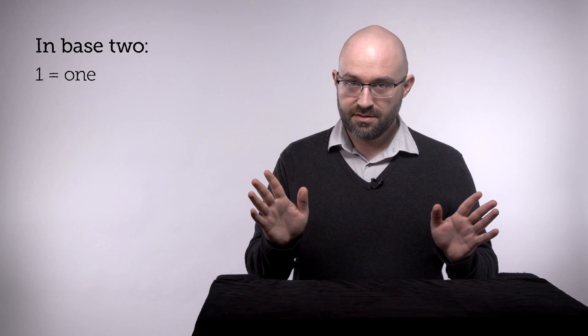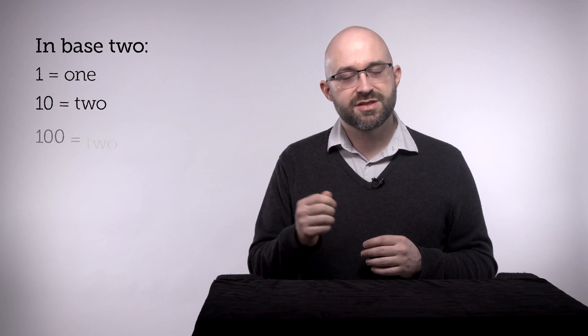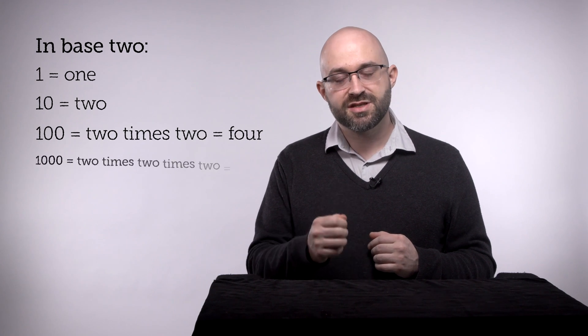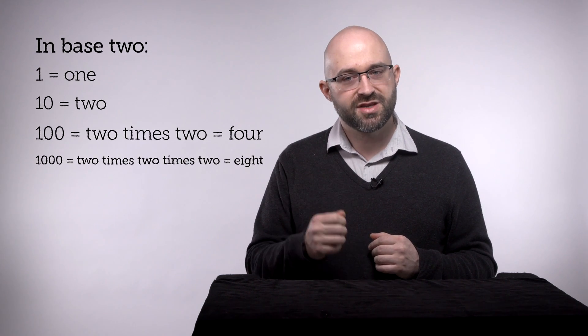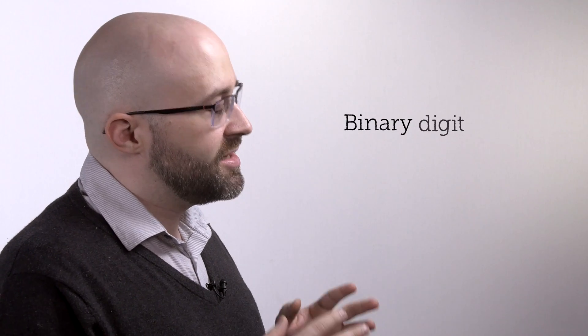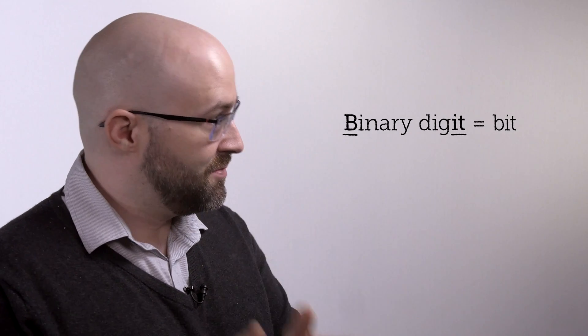In binary, 1 is still a 1. 1-0 now means 2. 1-0-0 means 2 times 2, or 4. 1-0-0-0 means 2 times 2 times 2, or 8, and so on. These binary digits are called bits—binary digit, bit. A bit can be a 0 or a 1.